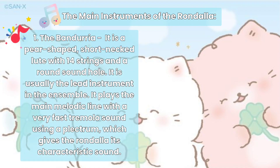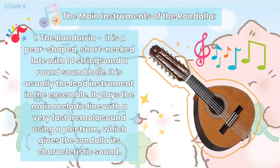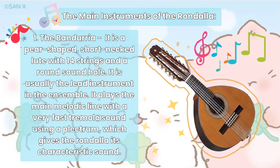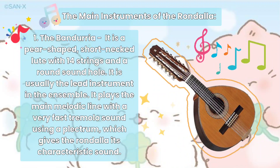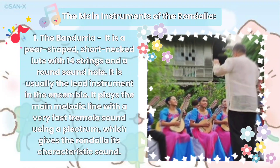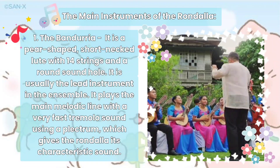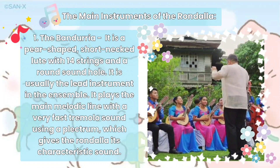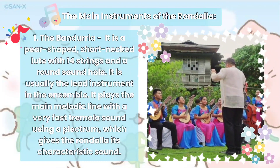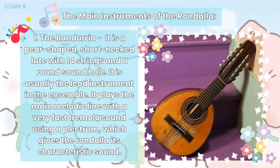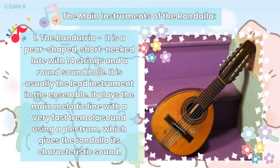First is the Banduria. It is a pear-shaped, short-necked lute with 14 strings and a round sound hole. It is usually the lead instrument in the ensemble. It plays the main melodic line with a very fast tremolo sound using a plectrum, which gives the Rondalia its characteristic sound.